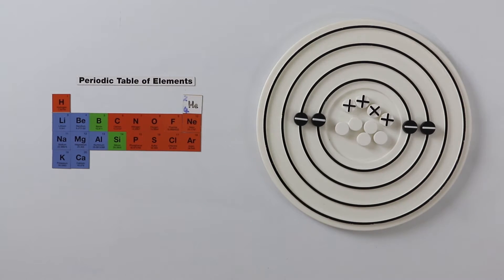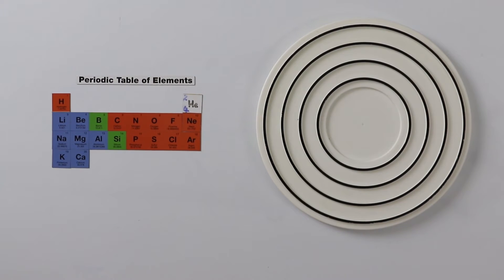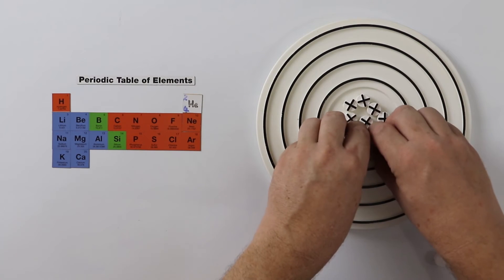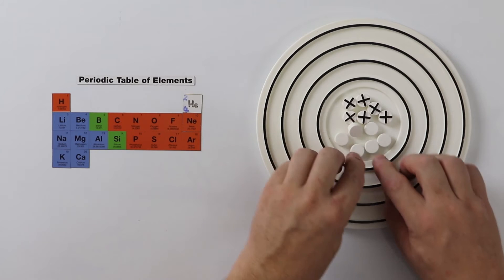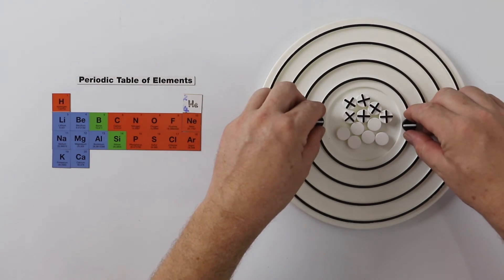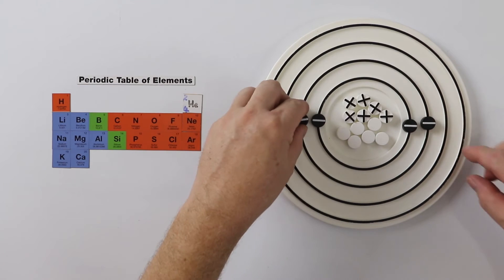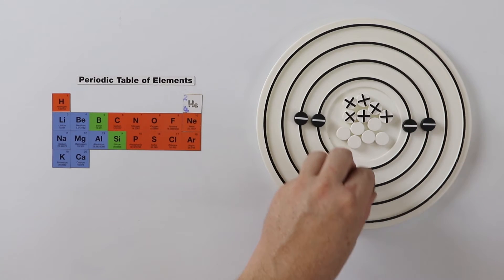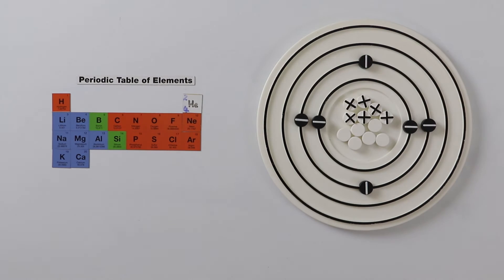Now we have an idea how this works. We'll jump across the periodic table to carbon. Carbon has an atomic number of six and a relative atomic mass of 12. So 12 minus six gives us six, which is how many neutrons we have. We'll put these into the nucleus. As there are six protons, we need six electrons to balance the atom. Two in the first layer, and one, two, three, four in the second layer.